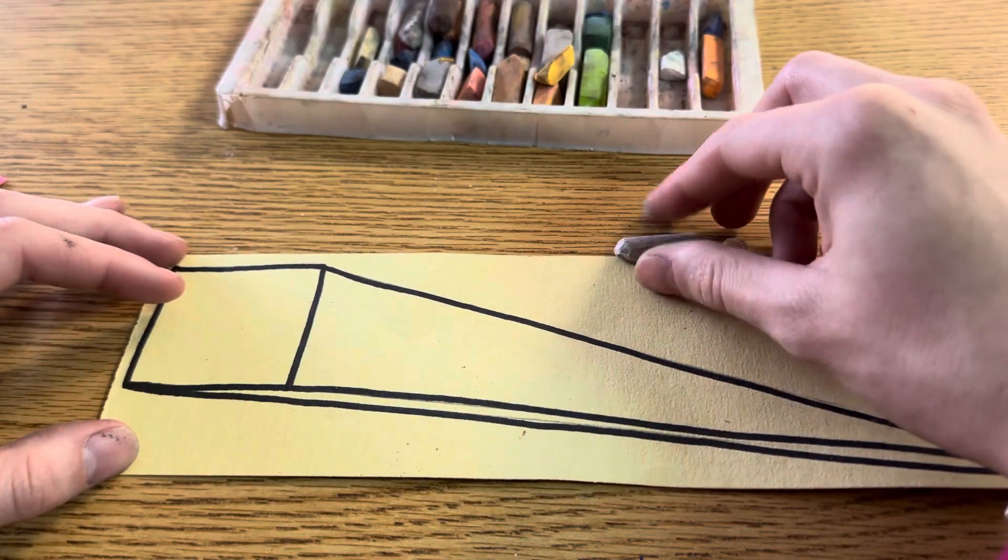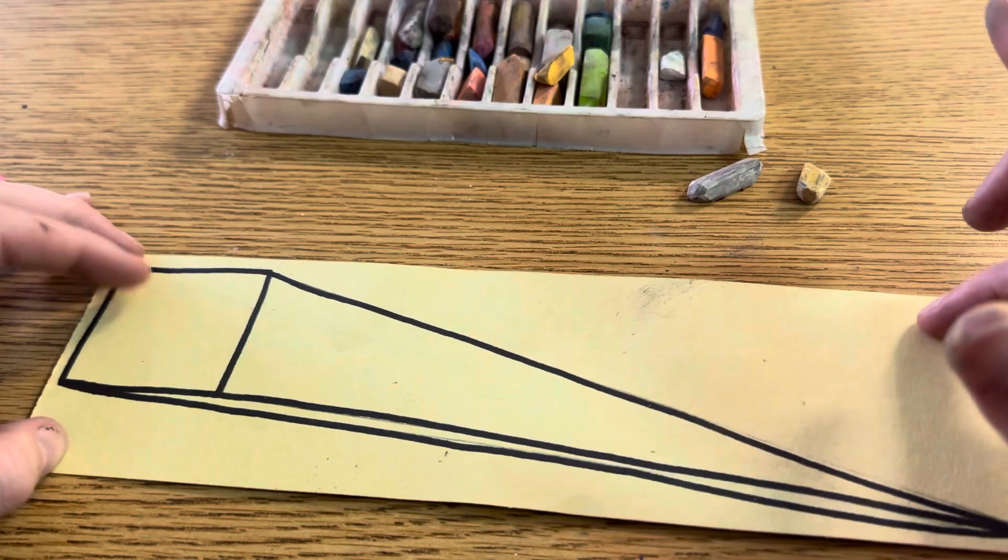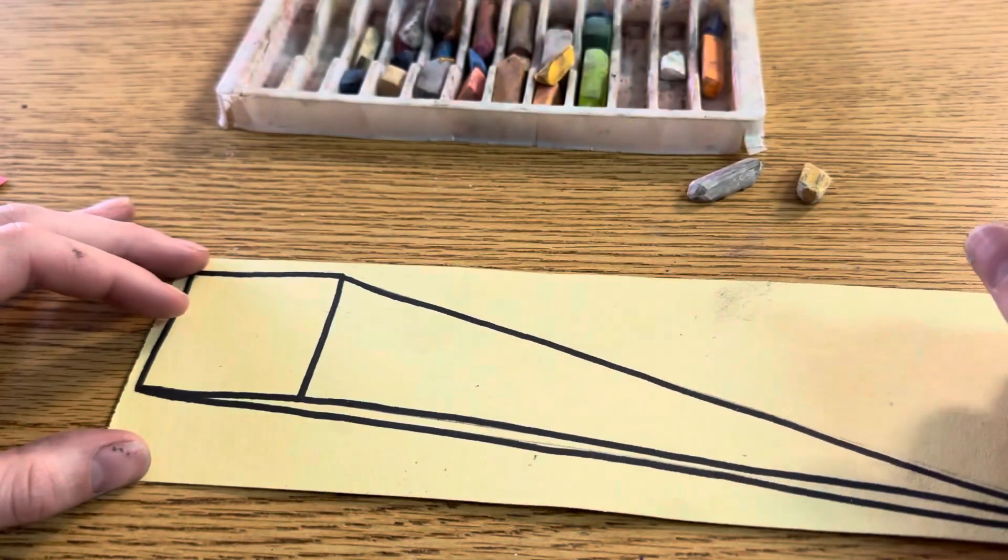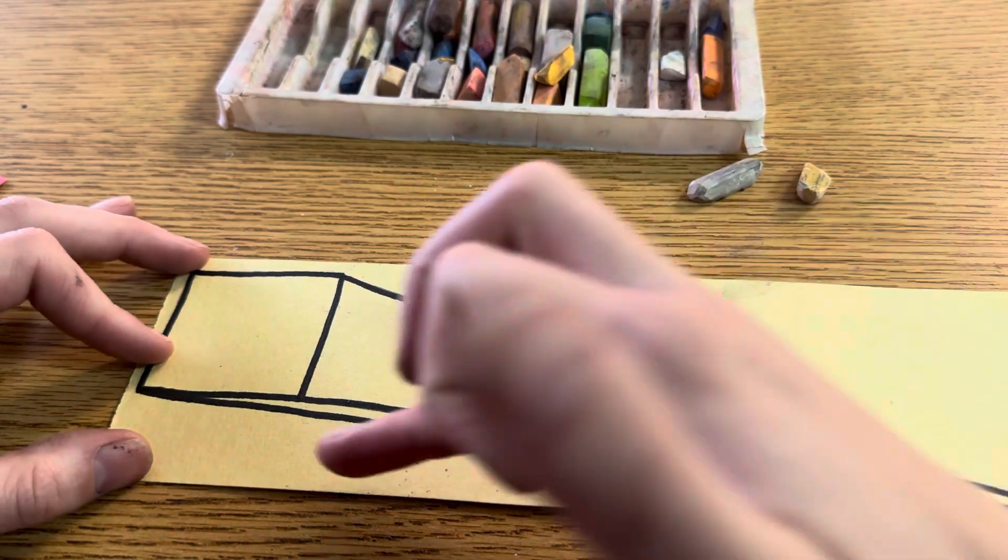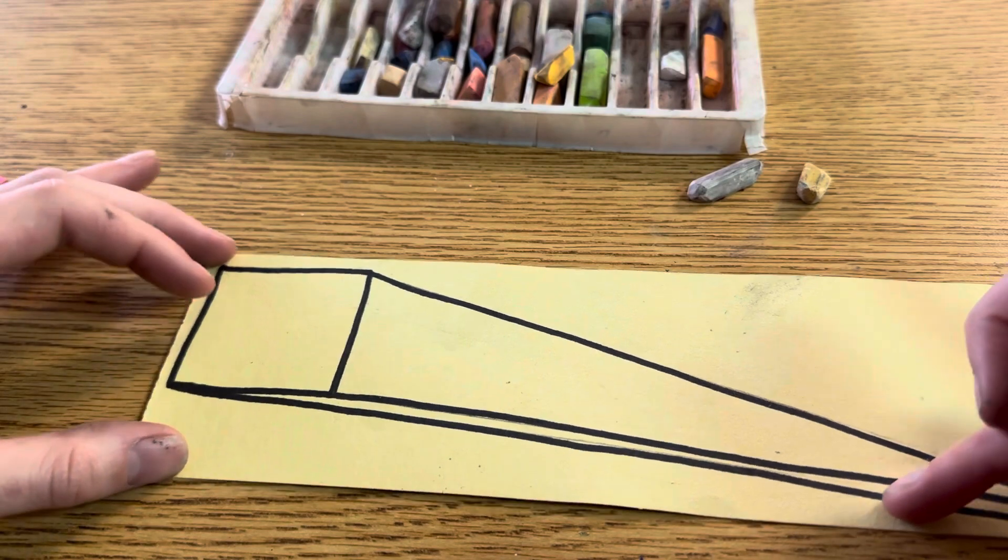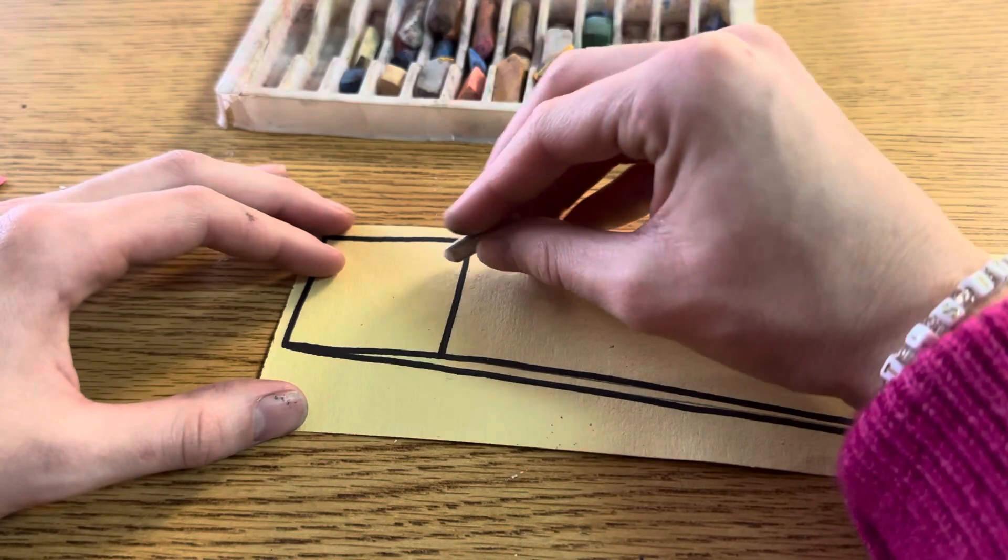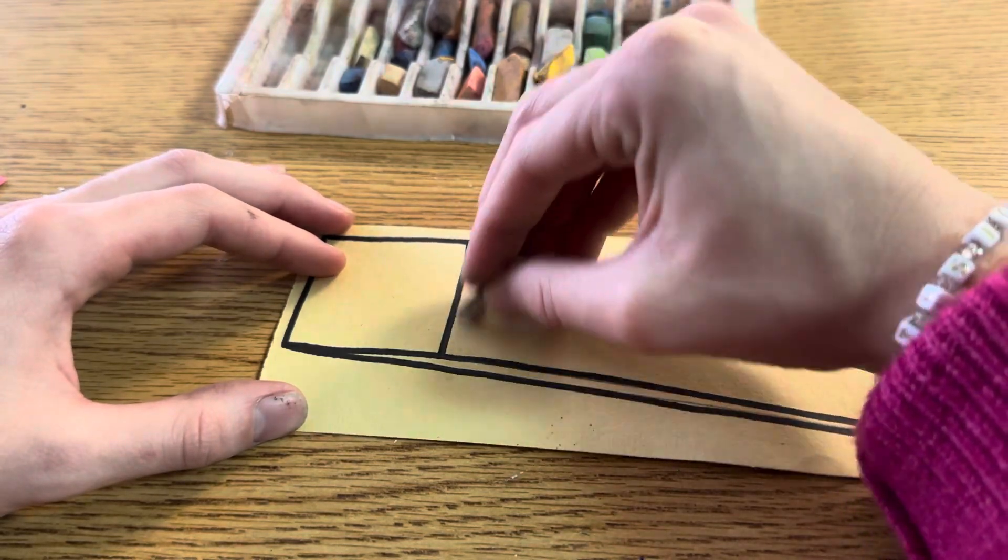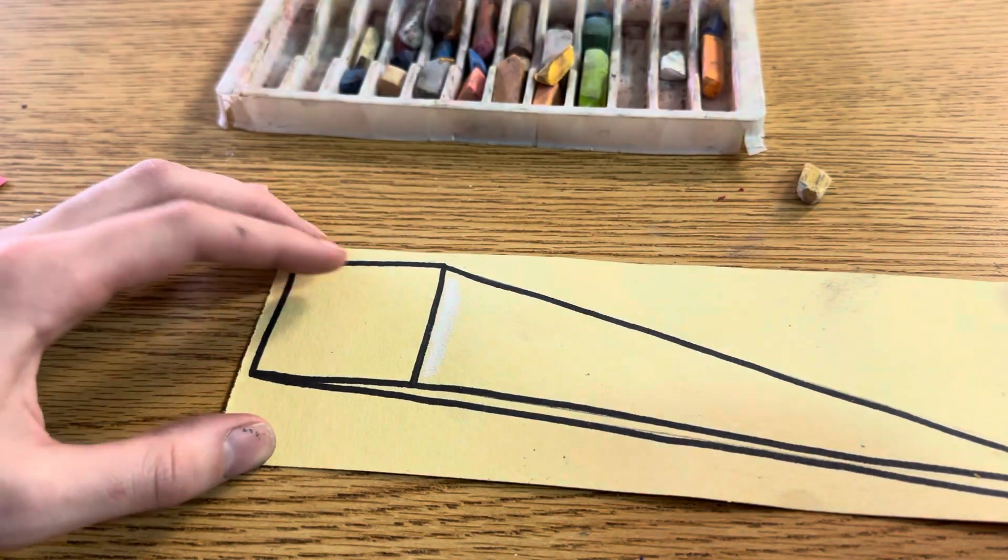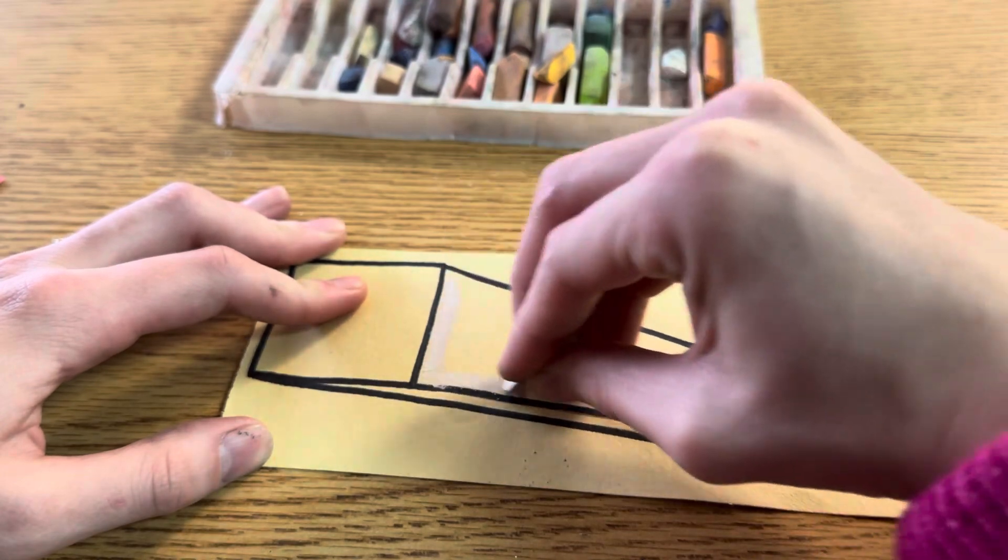Now I'm going to envision that my sun, my light source, is sort of up here. So if the sun was shining, I'm going to imagine what parts of my cube it would be hitting. I know for sure down here it would be hitting that part because that is the furthest part away from my light source. So what I'm going to do right at this edge is I'm going to use my chalk pastel and I'm going to create sort of an L shape right here.